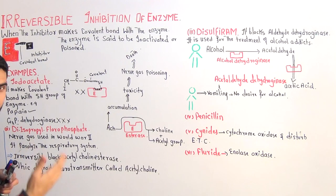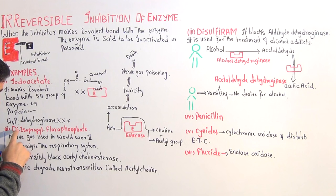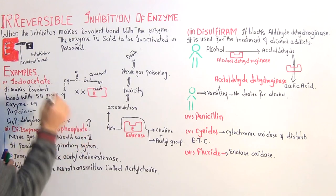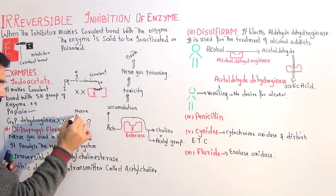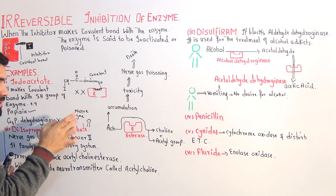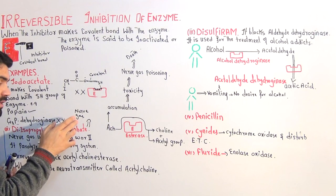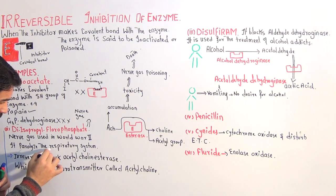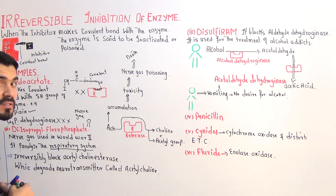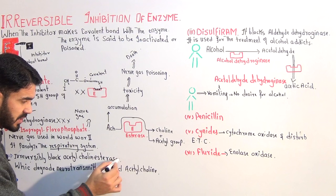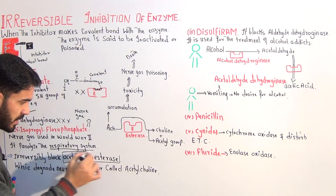The second example is diisopropyl fluorophosphate, also called nerve gas. It is more harmful than iodoacetate. This nerve gas was used in the Second World War and resulted in the death of many people. What it does is it blocks and paralyzes the respiratory system of the body.